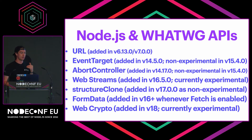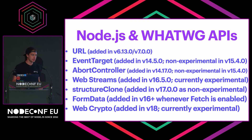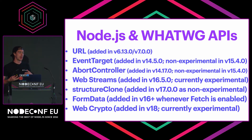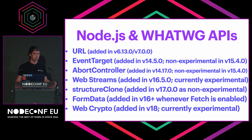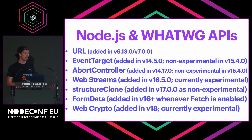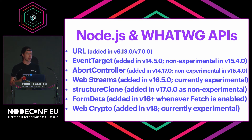This was a huge amount of work, because there were a ton of other Node.js and WHATWG APIs that needed to be added. The URL API from WHATWG was added way back in versions 6 and 7. It wasn't until version 14 that the next WHATWG API — event target — was adopted. AbortController came next. Web streams is still currently experimental. Structured clone was added in version 17 as non-experimental. Form data was added in 16-plus as part of the fetch implementation. And web crypto, added in version 18, will enable some of the newer parts of fetch.